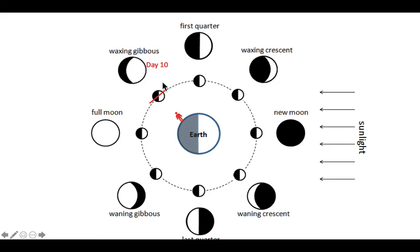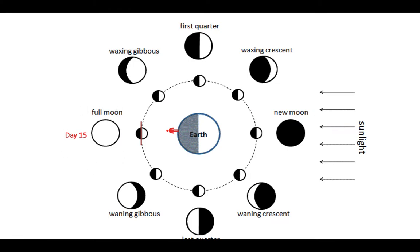Now the man is standing at midnight and he looks up and he sees the full moon. The whole half of the moon that faces Earth is lit up. This is of course the full moon, and it's about halfway through the lunar cycle on day 15.